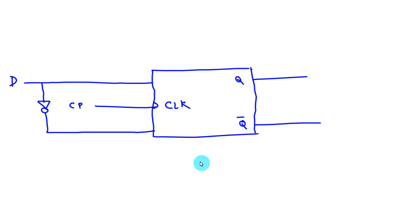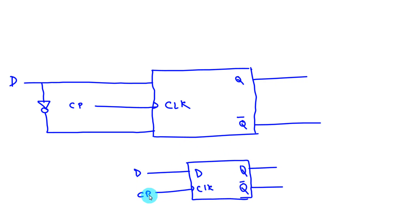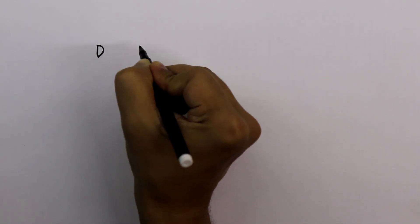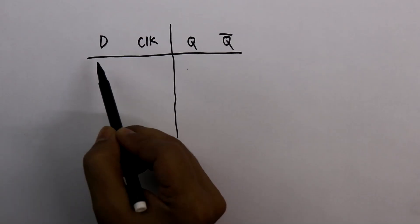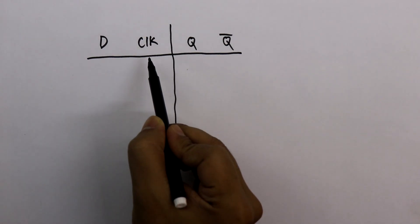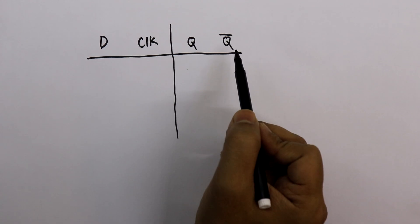So this is equivalent to the D flip flop. It has a clock pulse and a D pin, and the IC number is 7474. The truth table of the D flip flop has D and clock as inputs, and Q and Q bar as outputs.